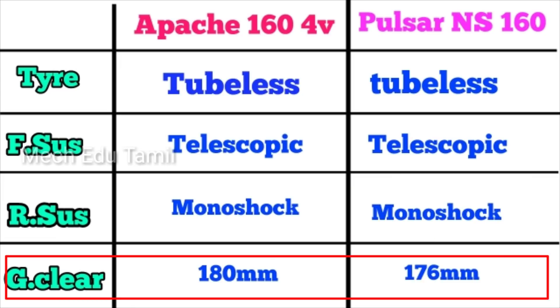For ground clearance, the Apache RTR 164V has 180mm of ground clearance, which is quite generous. The Pulsar NS160 has 166mm of ground clearance, which is slightly lower than the Apache.